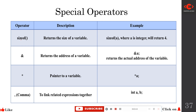The sizeof operator returns the size of a variable. For example, if I declare 'int a, b' and want to know the size of the int data type, I use the sizeof operator. Since we already know an integer allocates 4 bytes of memory, sizeof will display 4 bytes.